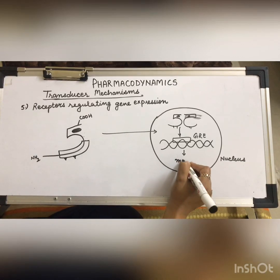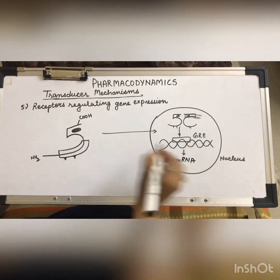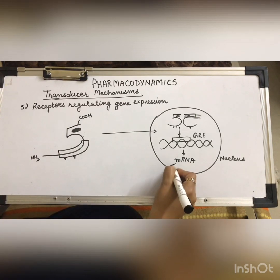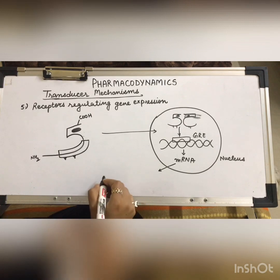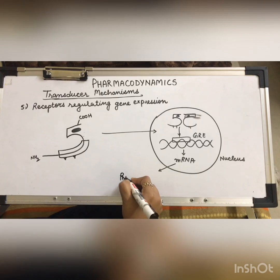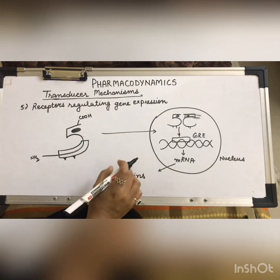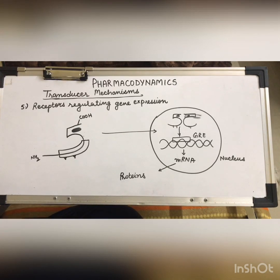When they bind to the GRE region, they regulate transcription, producing a specific mRNA. The mRNA exits the nucleus, and translation occurs at the ribosomes, forming proteins that are responsible for the alteration of cell functions.